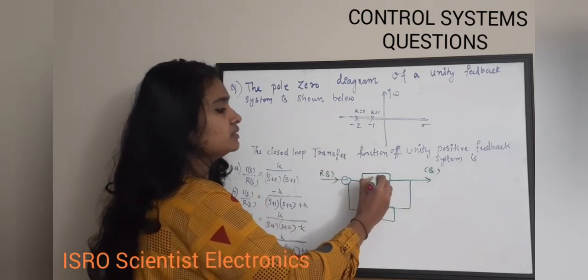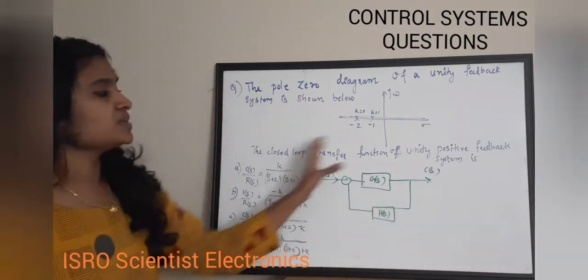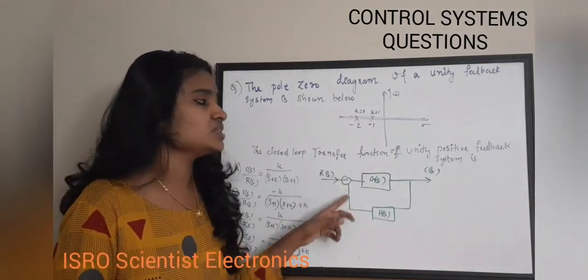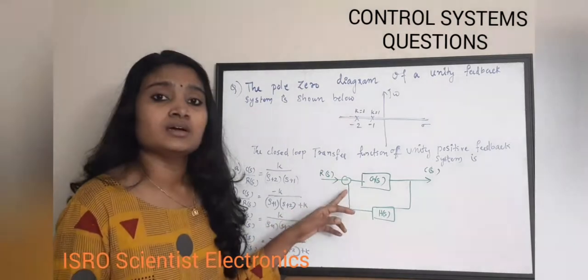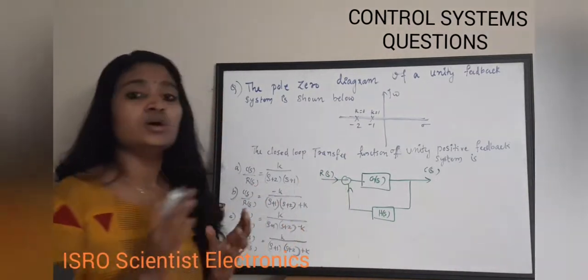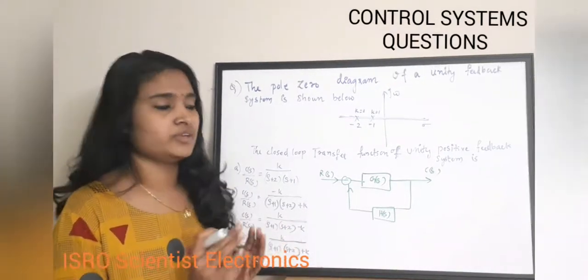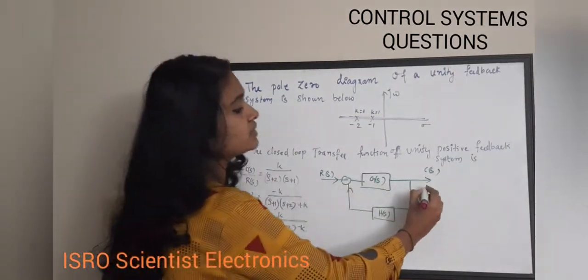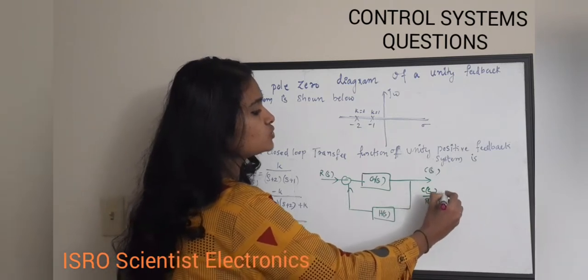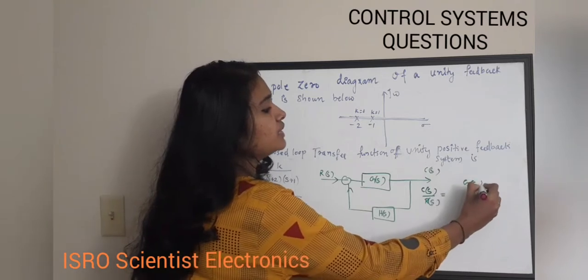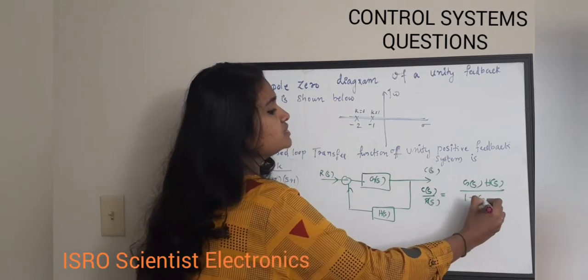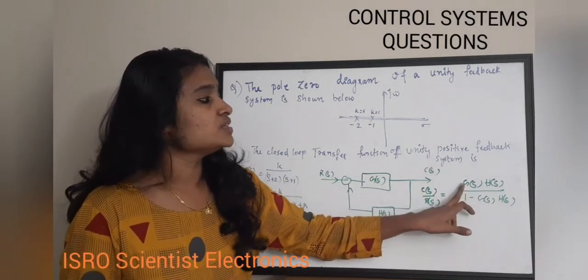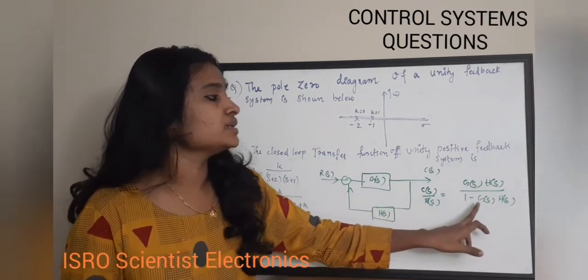There is a gain and a system transfer function. This represents a closed loop system with negative feedback, where the input is subtracted from the feedback — the two signals are out of phase. The closed loop transfer function of such a system is: C(s)/R(s) = G(s)·H(s) / (1 - G(s)·H(s)).